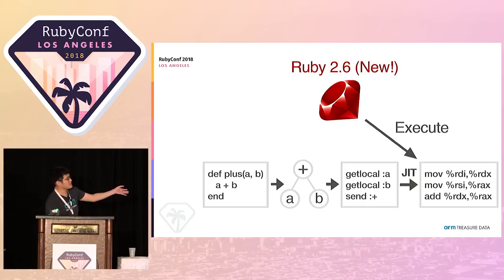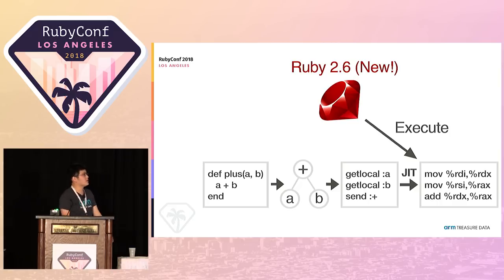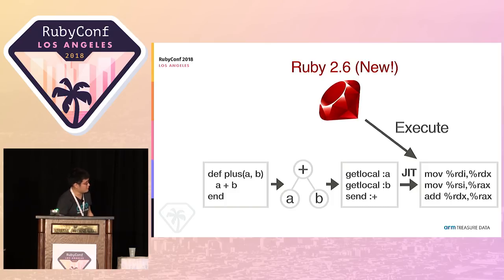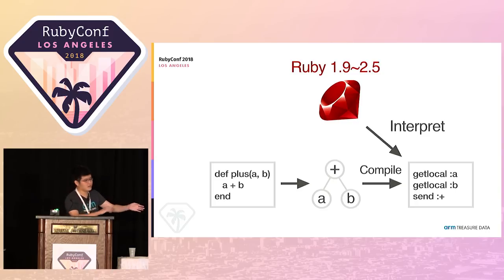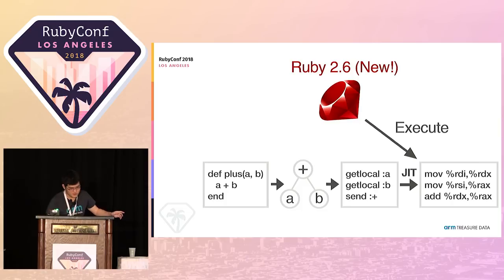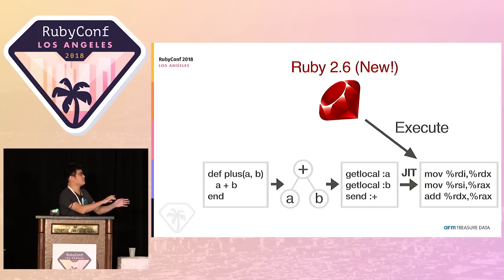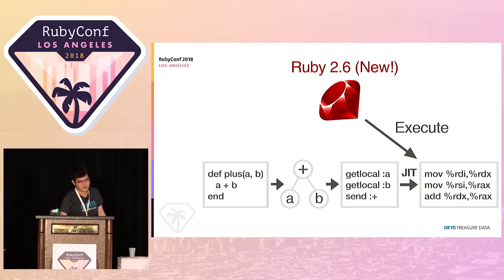In Ruby 2.6, I took the next step: compiling to native code, which is specific to the machine running the Ruby interpreter. This requires less calculation. With the virtual machine, executing a `get_local` instruction requires a lot of work to retrieve local variable A. But with native code, it just loads the first argument of the method into a register, fetches the second argument into a register, and runs the add instruction — much faster than dispatching the bytecode instruction. This is the JIT compiler.